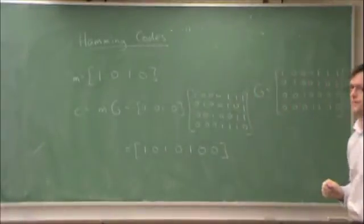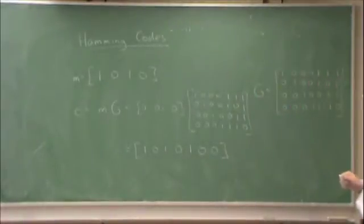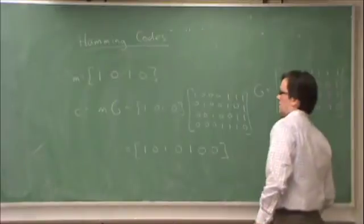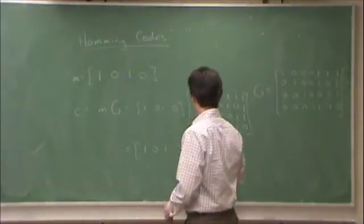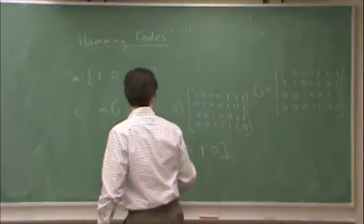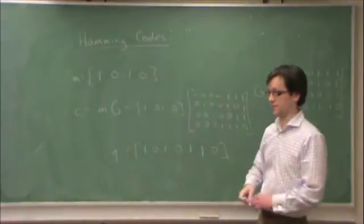So there is the code word that we sent. Now, let's say we receive this, where the sixth bit has been flipped.